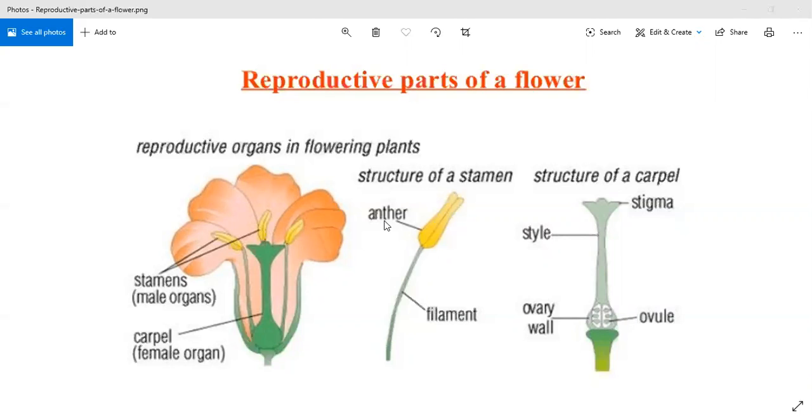Structure of anther: It is composed of two anther sacs or lobes separated by connective tissue. The anther is bilobed, and each lobe or sac consists of two theca separated by a septum.